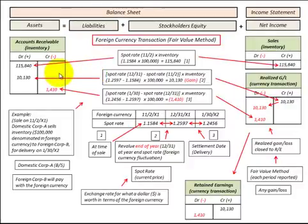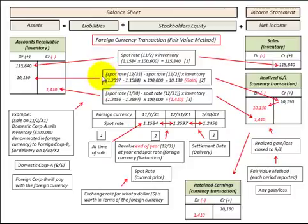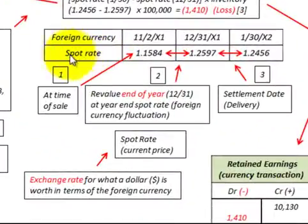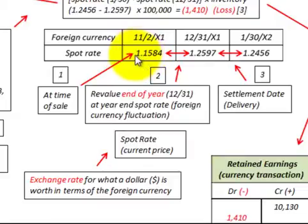To calculate our accounts receivable, our sales, and any gains or losses on these currency transactions, we're going to have to convert the dollar amount of inventory sold into what it's worth in terms of foreign currency being received. We do that through the spot rate or the exchange rate for the dollar. The spot rate is really the exchange rate for what a dollar is worth in terms of the foreign currency. So a spot rate of 1.1584 means that one dollar is worth one dollar and fifteen cents plus this extra amount.